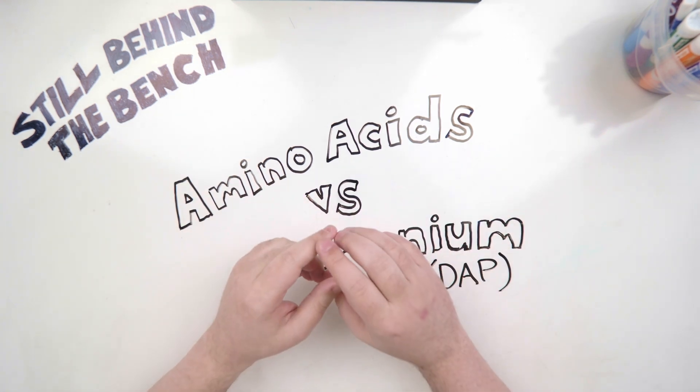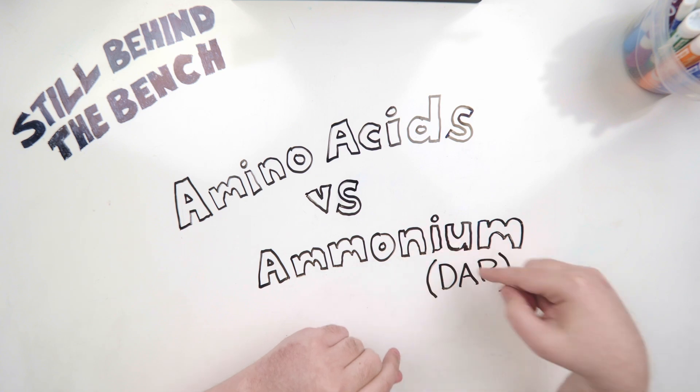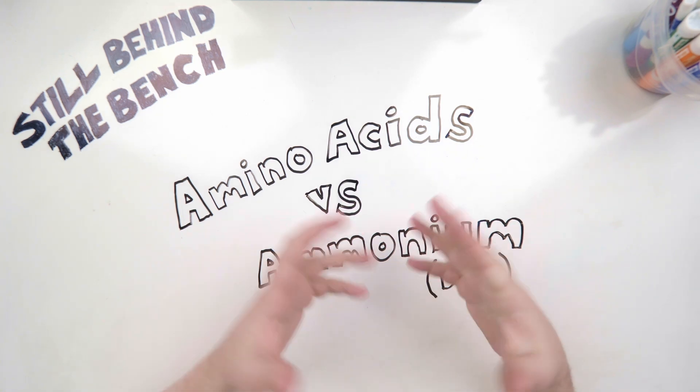Hopefully it'll whet your appetite to learn more and teach you enough so that you're more self-sufficient. So for this video I'm going to be talking about amino acids versus ammonium, usually provided as DAP, as a nitrogen source.